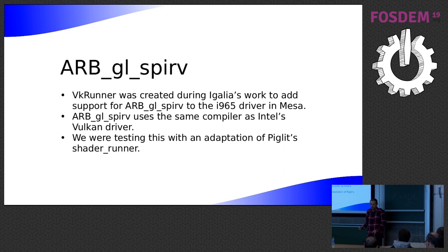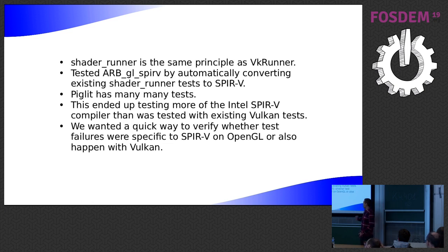And I think that ended up testing quite a lot more of just the general SpurV compiler than had been tested with the Cronos CTS test. So it picked up a few more problems that perhaps weren't seen before. So when we ran into a problem on the OpenGL SpurV, we often weren't sure whether that's a problem that we'd introduced on the SpurV extension or whether that was just an existing problem with the SpurV compiler. So we really wanted a quick way to be able to run the shader tests that we had from shader runner and run them with the Vulkan API as well.